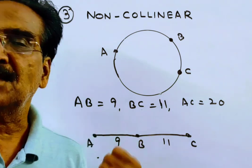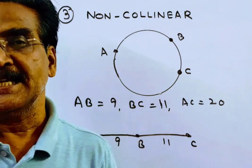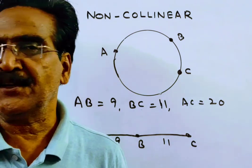Therefore, the number of circles passing through these points is zero. Thank you.